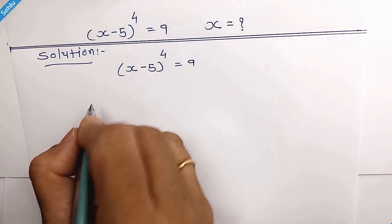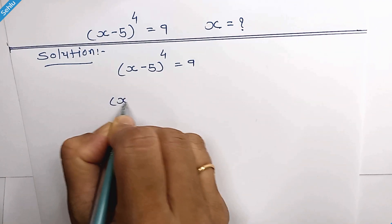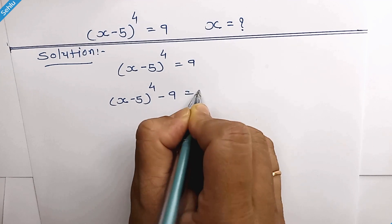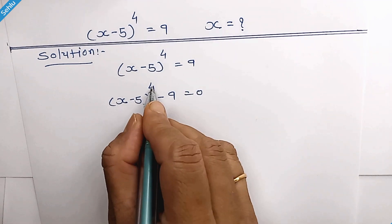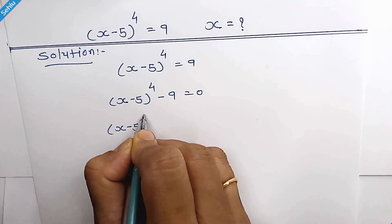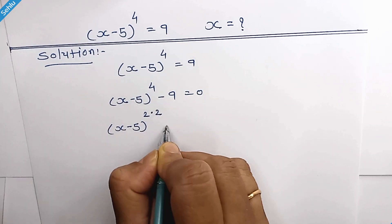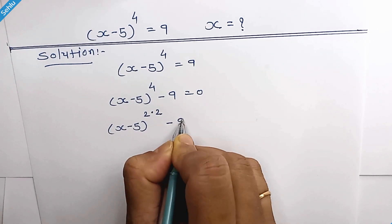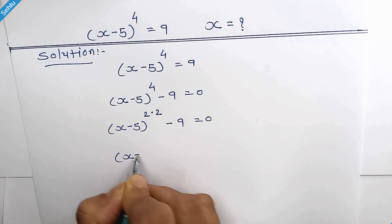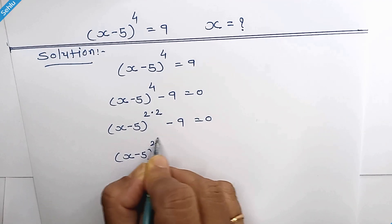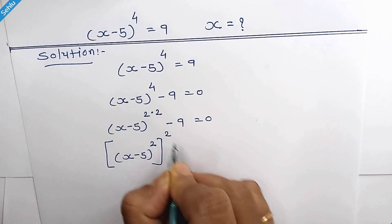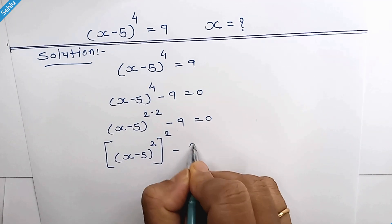First, we will move 9 to the left hand side. Now this 4 can be written as 2 times 2, so we can write it as (x minus 5) whole square, whole square, and 9 is 3 squared.